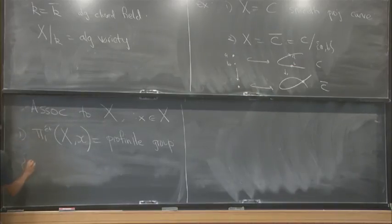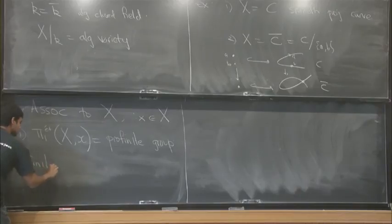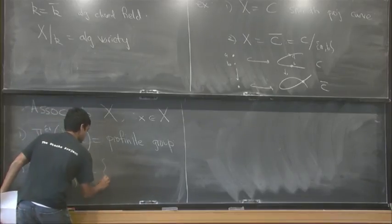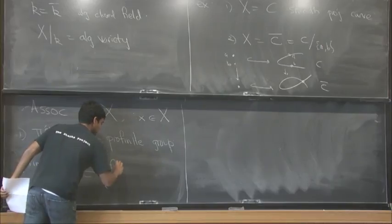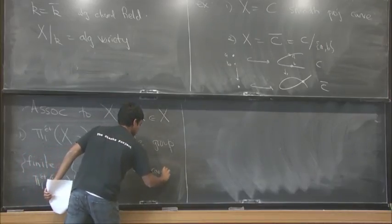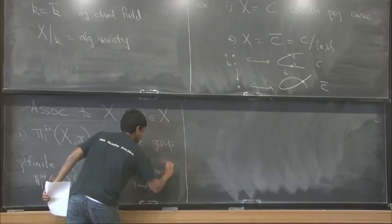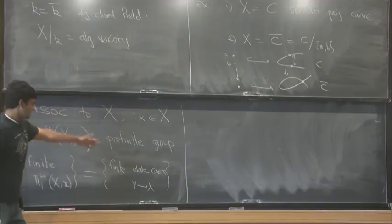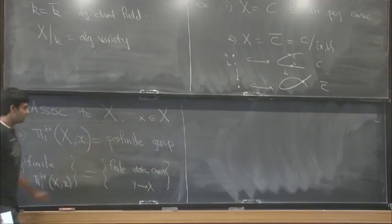So the definition is as follows. Finite sets with an action of this group. This category is naturally equal and essentially by definition to the category of finite étale covers of X. So once again, if you're not an algebraic geometer, in the world of topology, this is just a covering space with finite fibers.